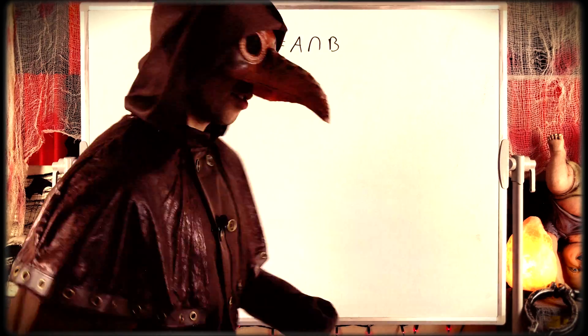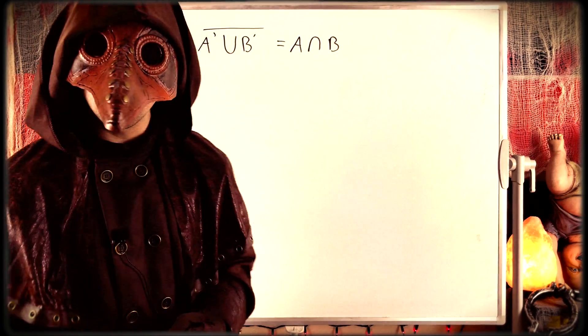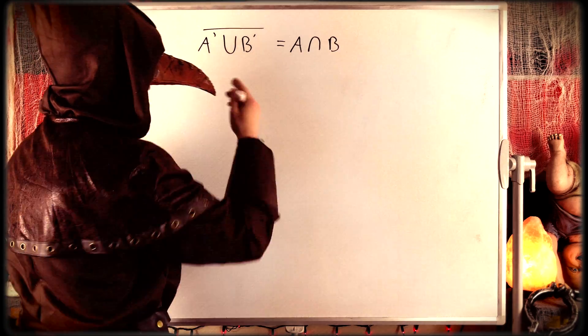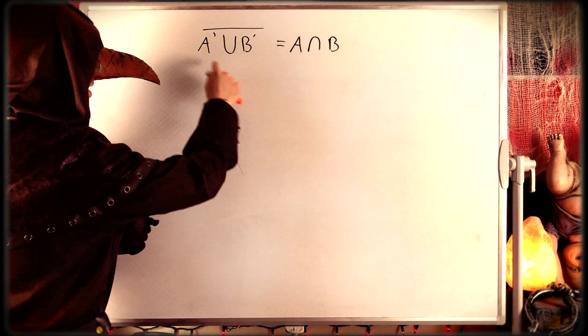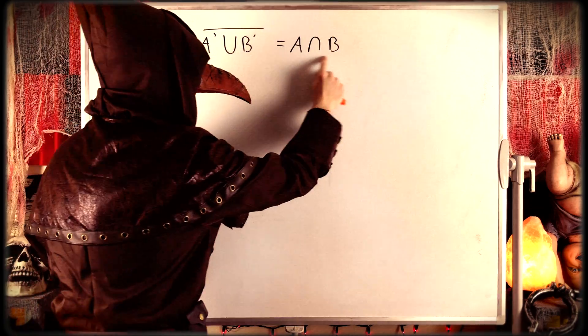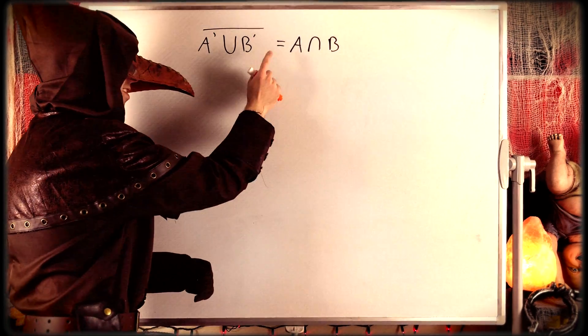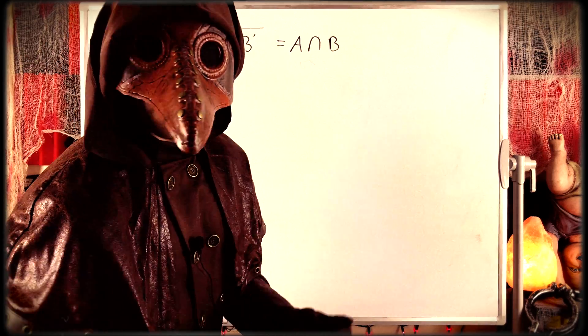Alright, so let's just get into the proof. It's pretty straightforward. Recall that to prove the equality of these two sets, we just need to prove that they are subsets of each other. So we need to prove that this is a subset of this, and we need to prove that this is a subset of this, and then we'll be done and we can rest easy knowing that this is true.